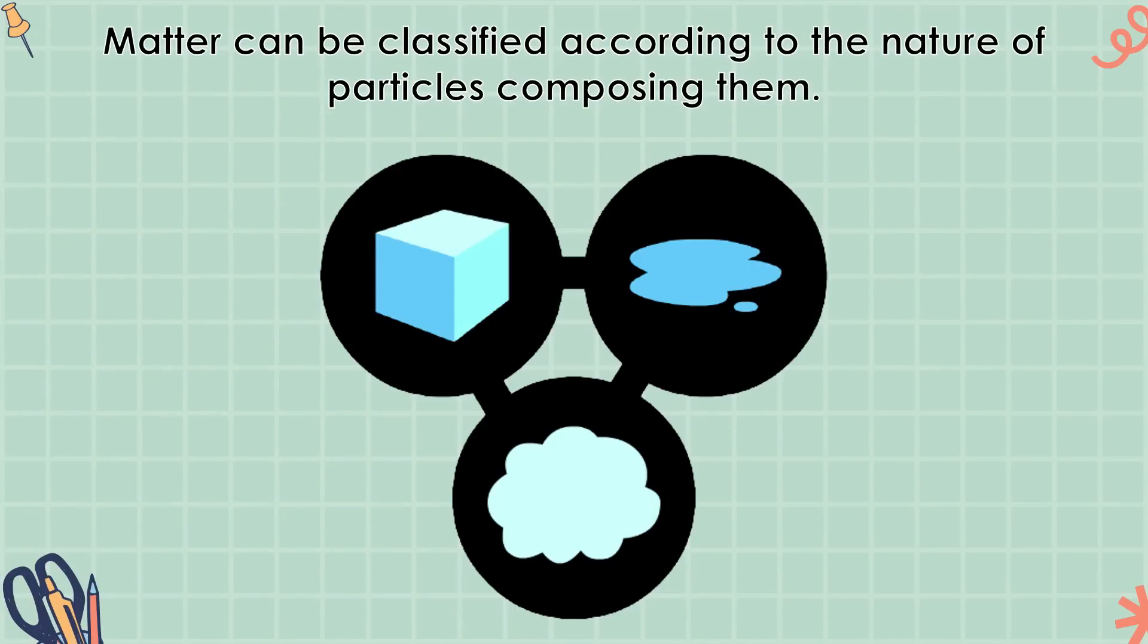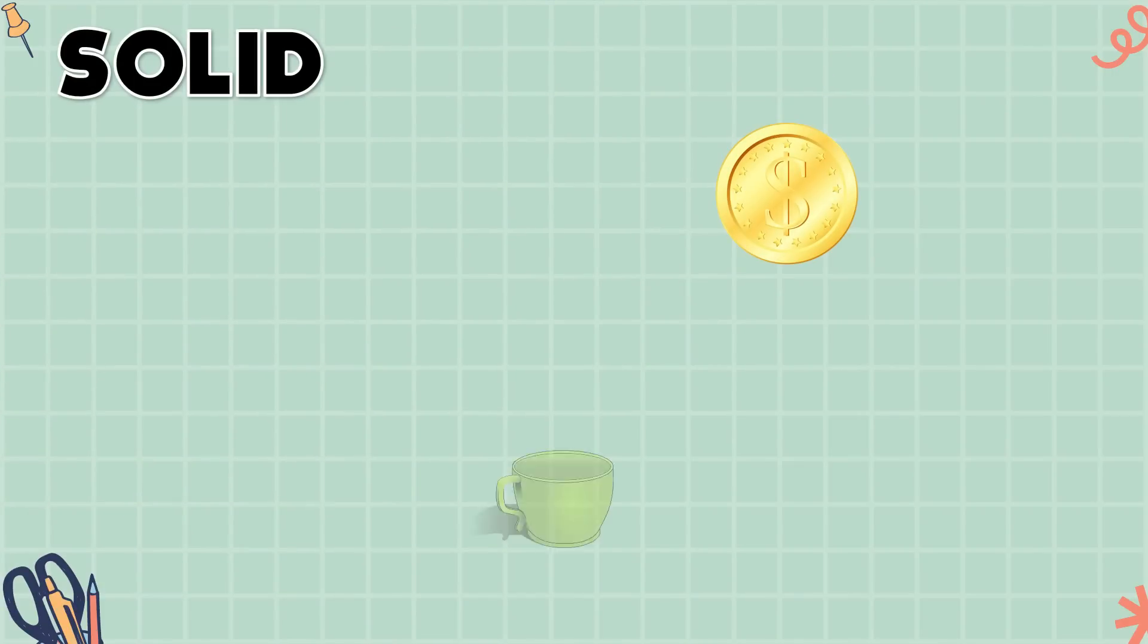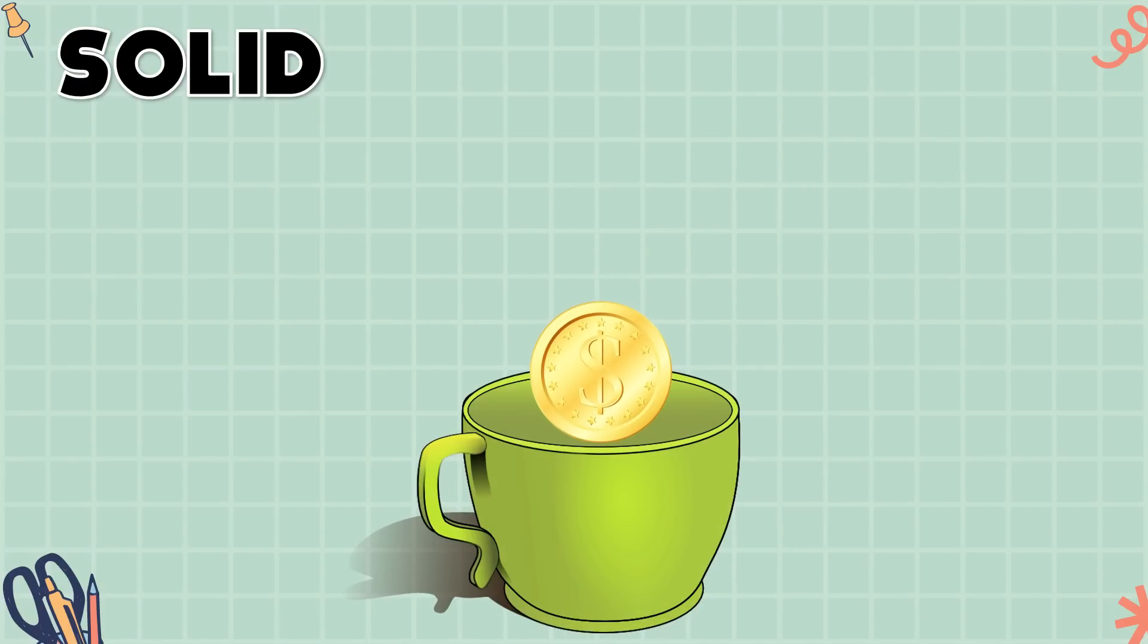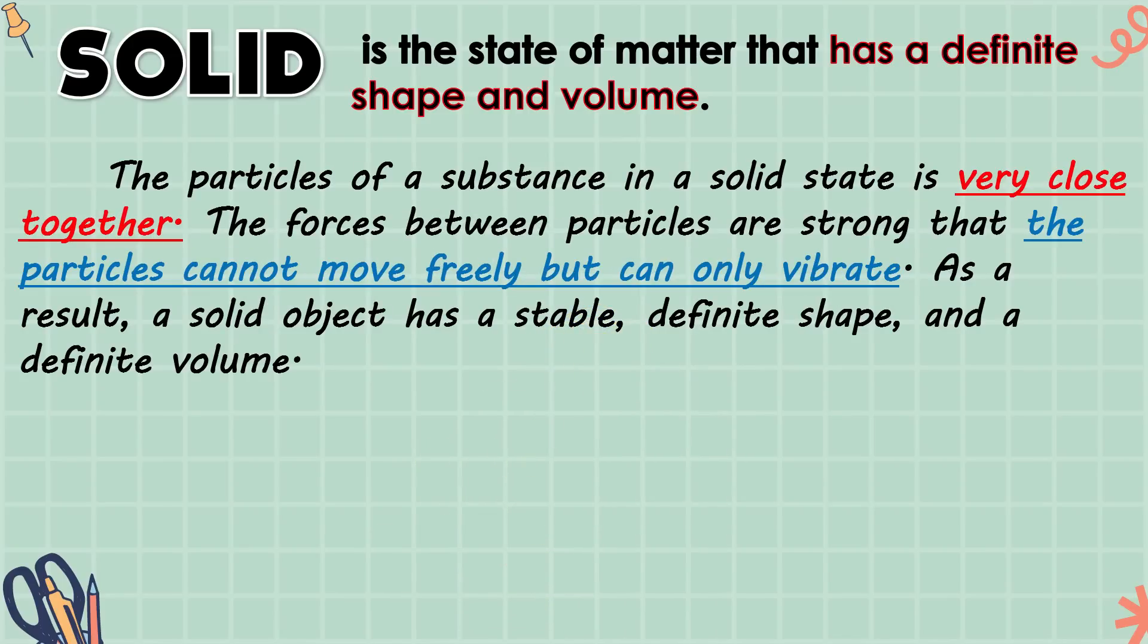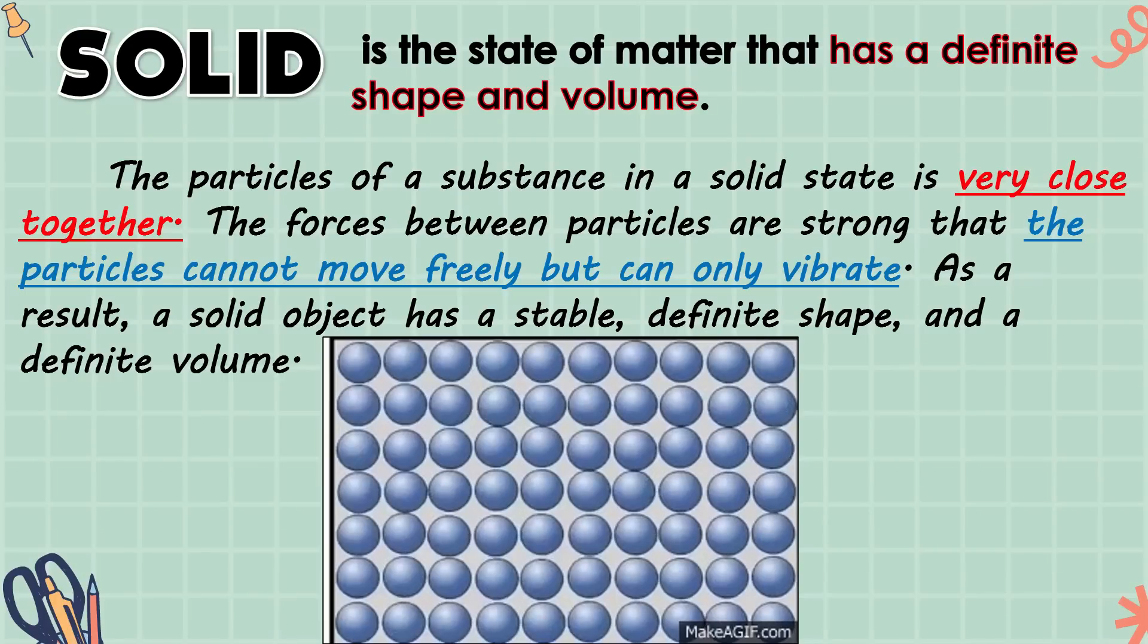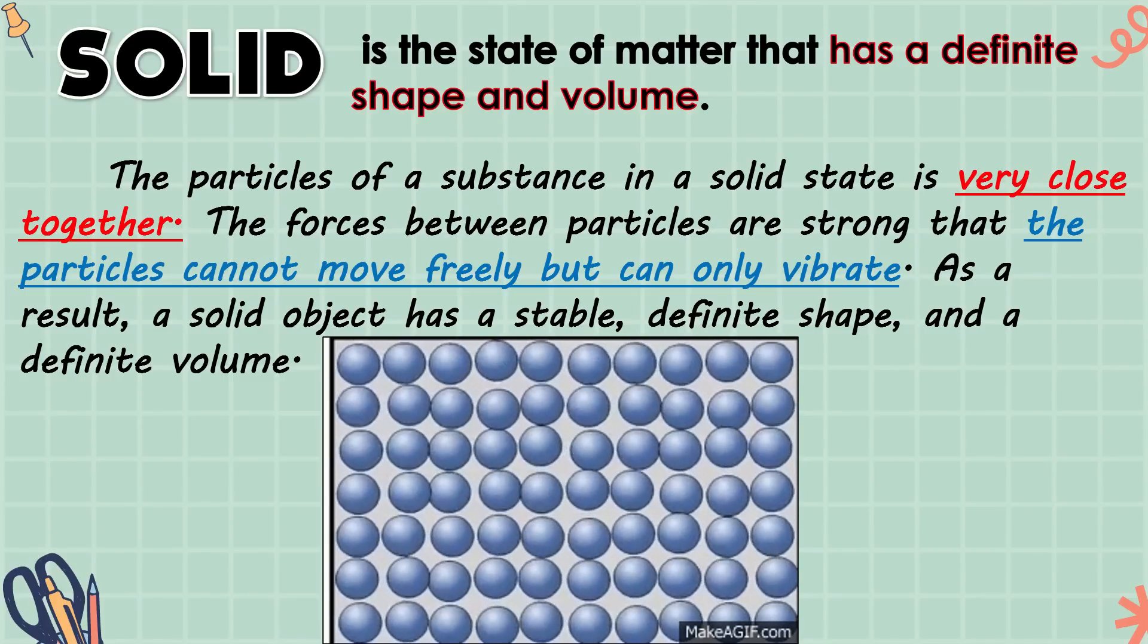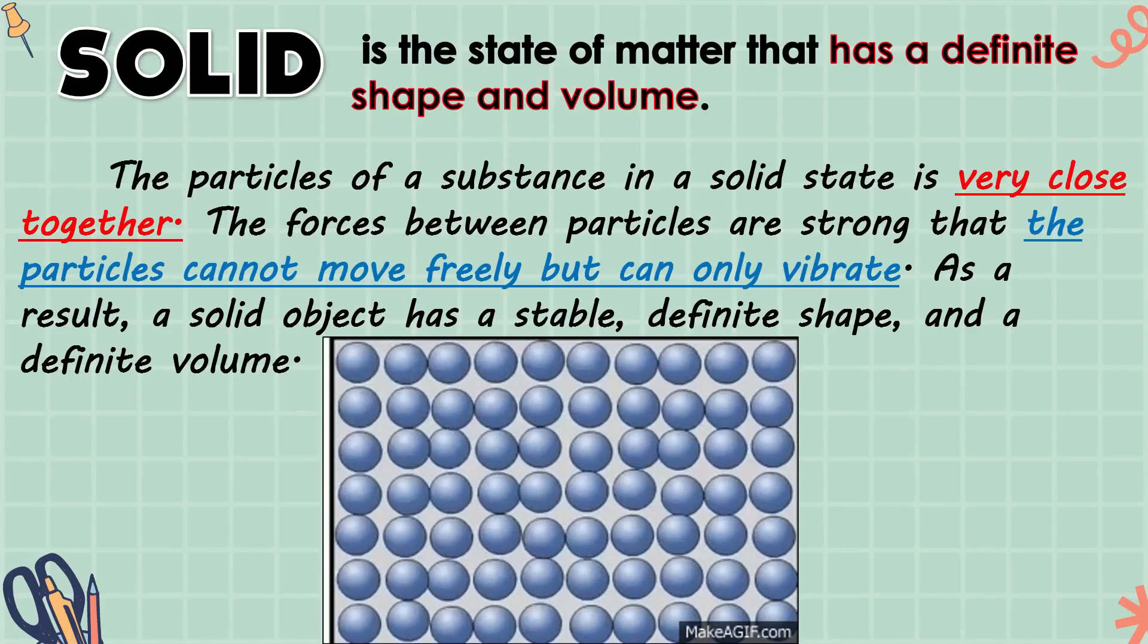Matter can be classified according to the nature of particles composing them. In class, they are classified as solid, liquid, and gas. Tara at isa-isahin natin silang pag-aralan. Solid. Try putting a coin into a cup. May nangyari ba sa shape or size ng coin? Wala. The coin keeps its original shape and volume. Pero bakit? Because the coin is solid. We can define solid as the state of matter that has a definite shape and volume. The particles of a substance in a solid state is very close together. The forces between particles are strong that the particles cannot move freely but can only vibrate. Look at the picture class. As a result, a solid object has a stable, definite shape, and a definite volume. Ang ibig sabihin ito, ang solid ay kayang i-maintain ang kanyang shape at volume kahit na ilipat pa ito sa ibang container.